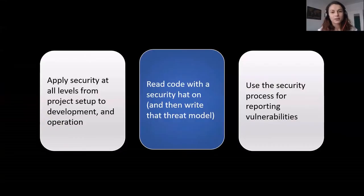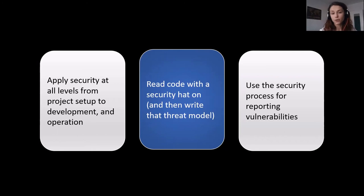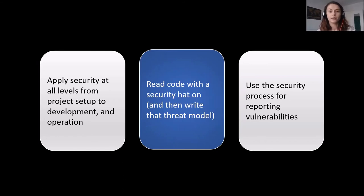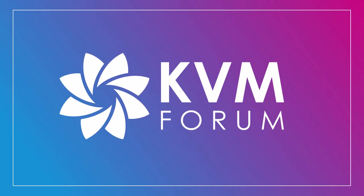If I want you to take three things from this presentation: first, it is important to apply security at all levels, from project setup to development and operation. Second, security vulnerabilities don't only get discovered by fuzzing — you can also discover them by reading the code with a security mindset, and once you do, write the threat model and read threat models of the components you are consuming. Third, and this is really important: if you discover a security vulnerability in one of the RustVMM components, please use the security process for reporting them. Thank you for joining this session.